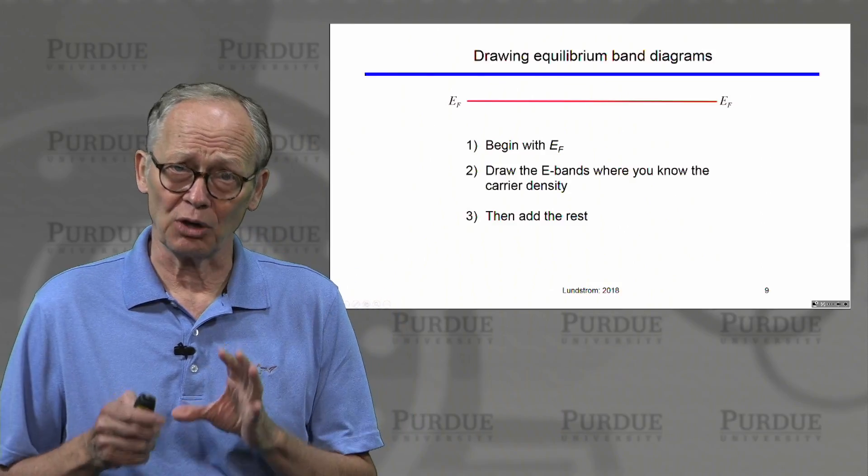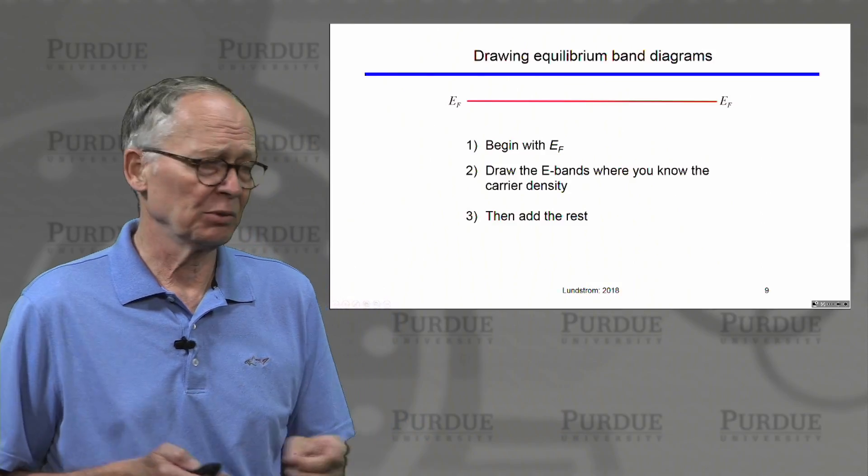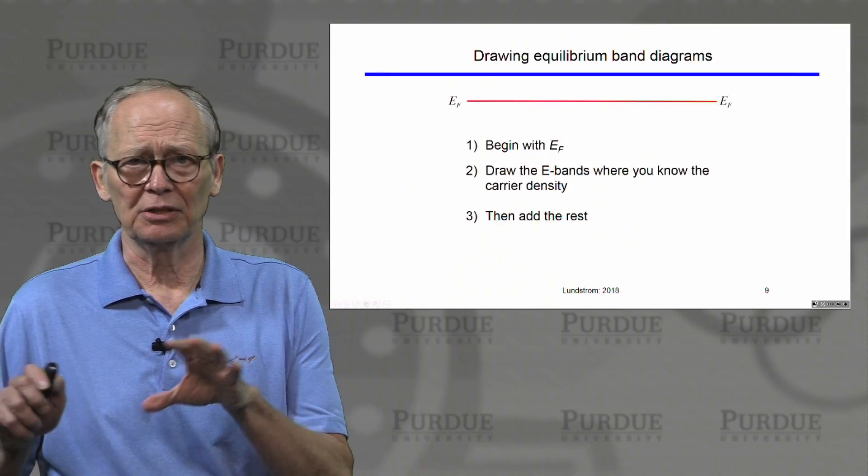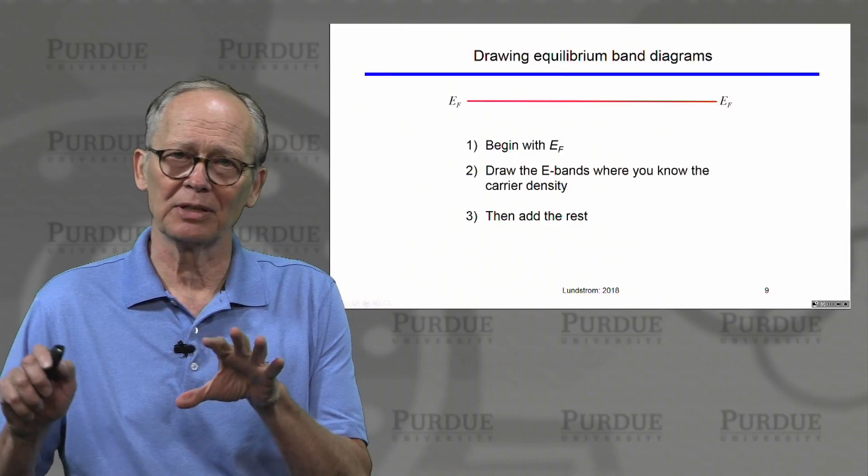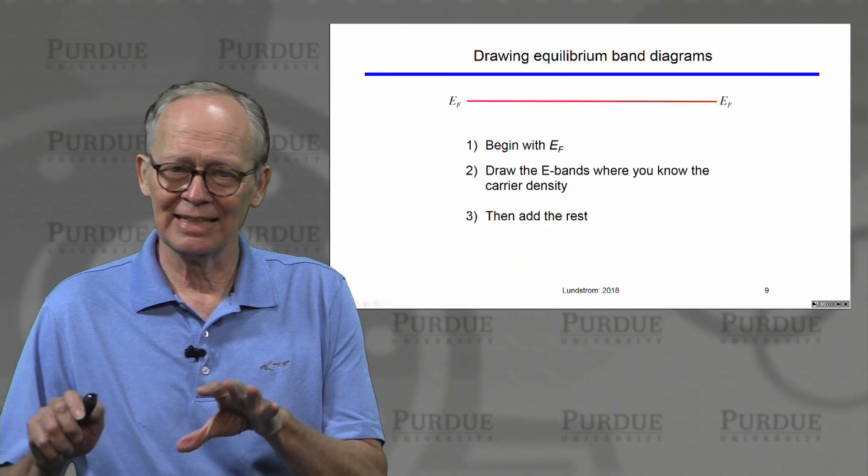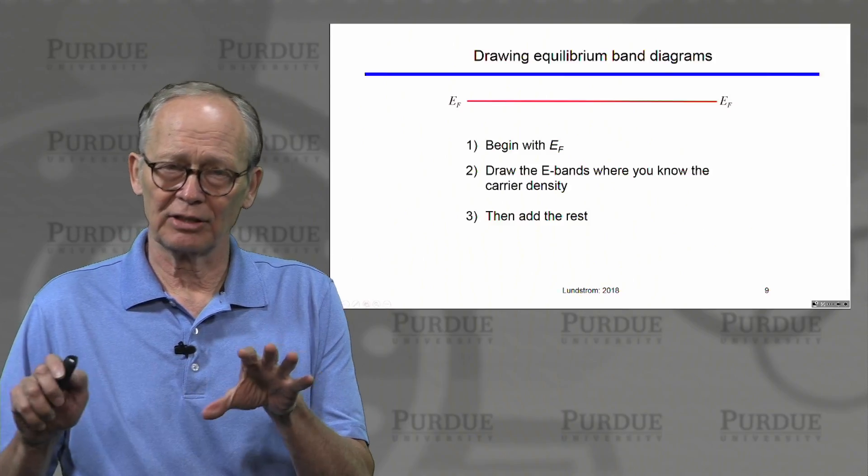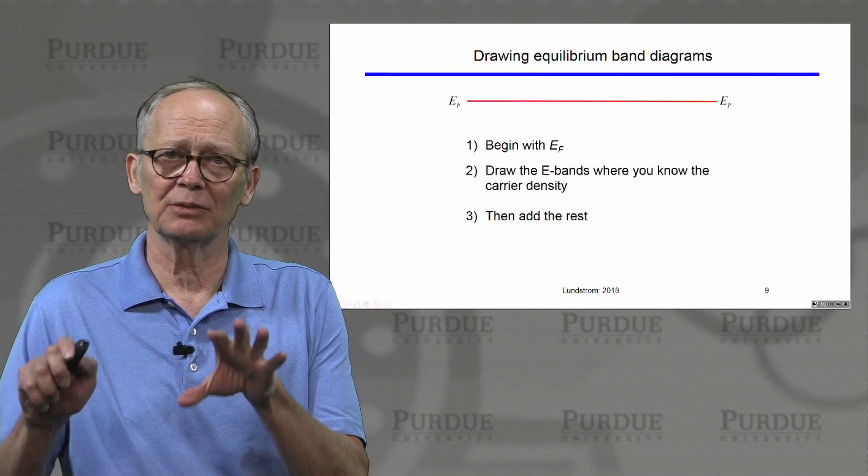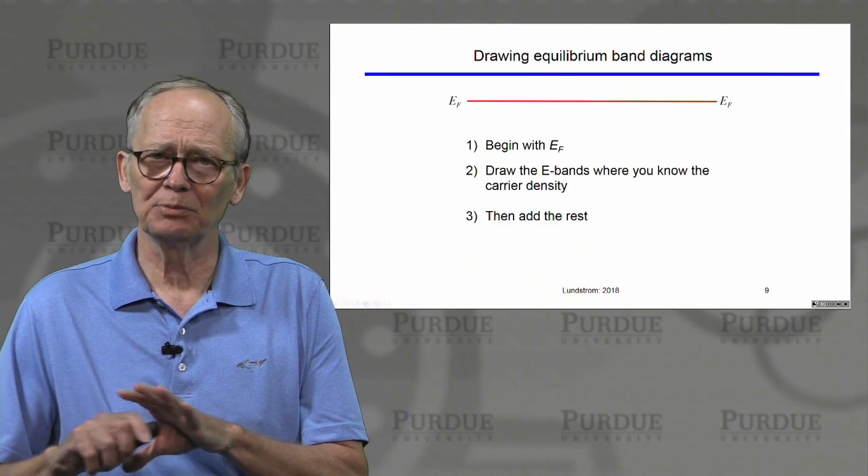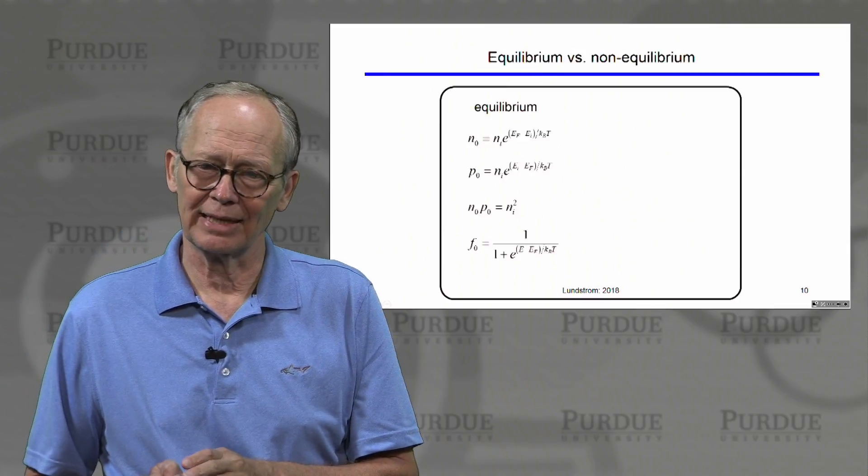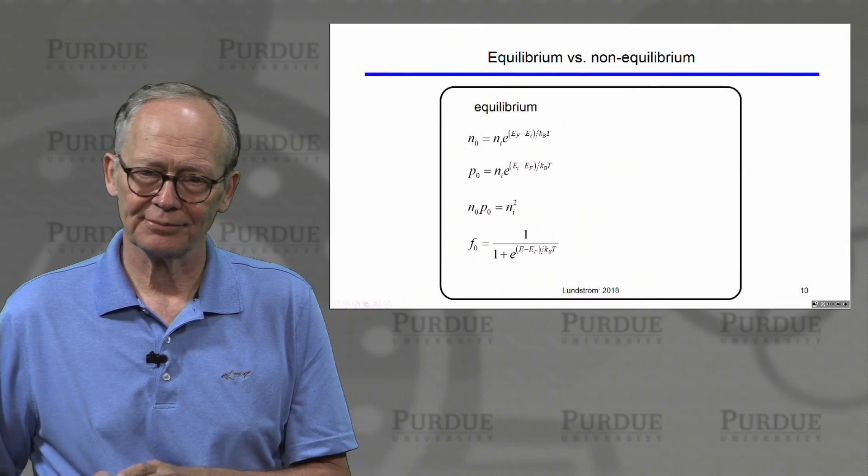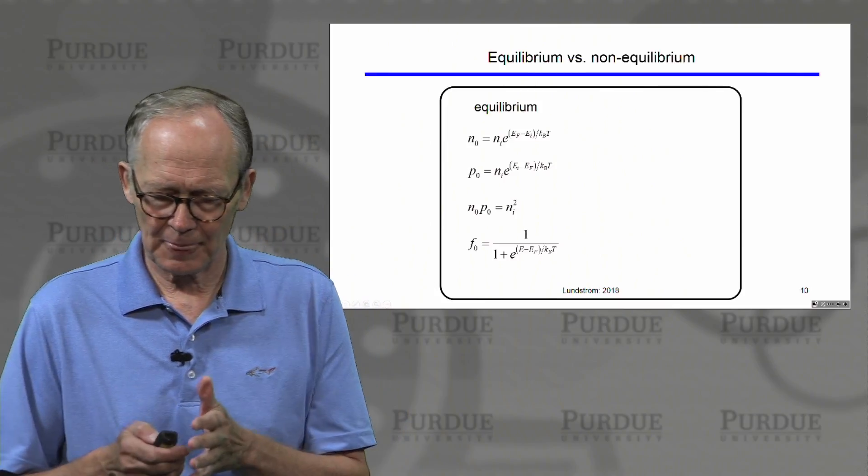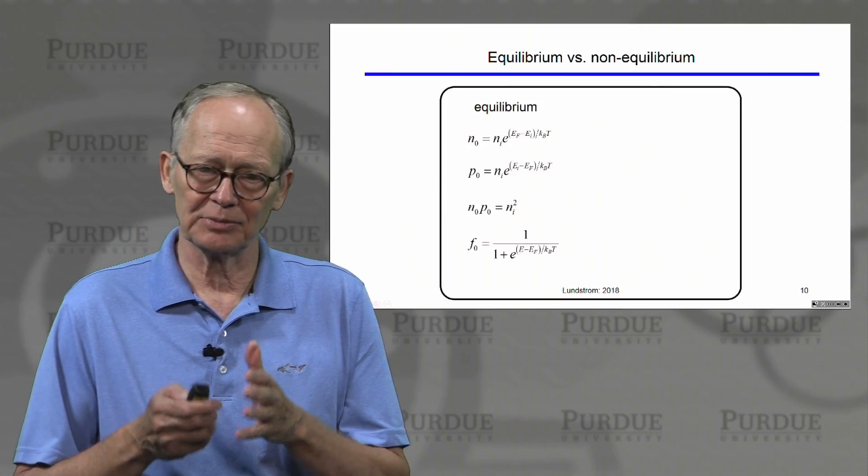We talked about how one draws equilibrium energy band diagrams. We begin with the Fermi level and draw a straight line because we know it's constant. Then we can usually deduce in regions far away from the regions where things are changing, the carrier concentrations may be uniform. We can put in those regions where carrier concentration is uniform and then smoothly connect things up to have our complete energy band diagram.